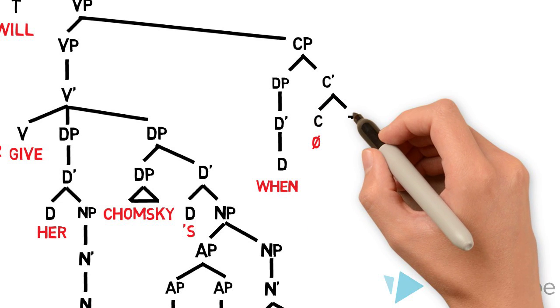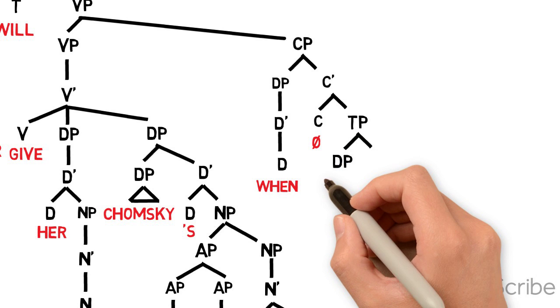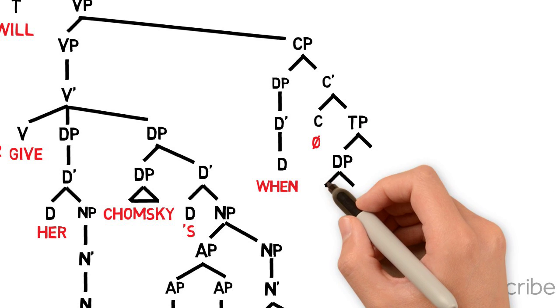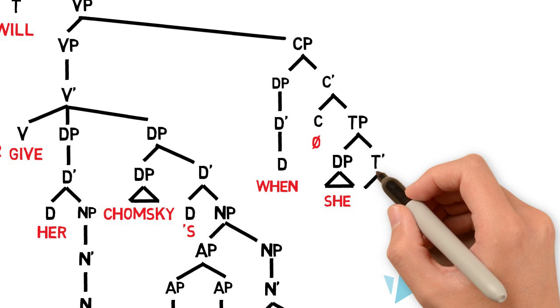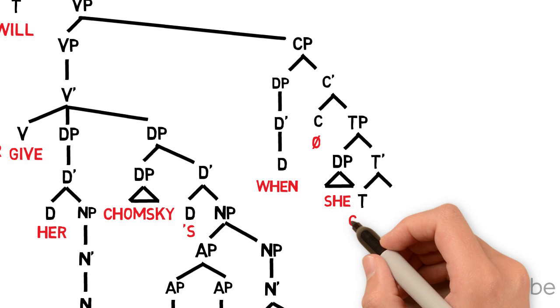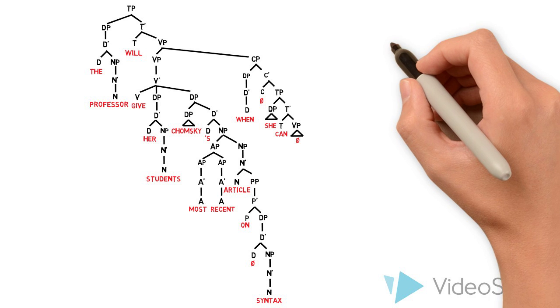Then we have our CP with a null C. C will take TP as its complement. The subject, she, occupies specifier position of TP. The modal, can, occupies T. It takes a complement, VP, but this VP is null because it has been elided.